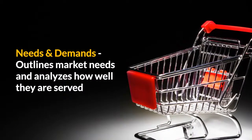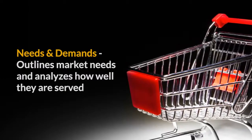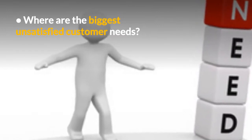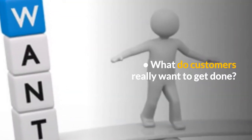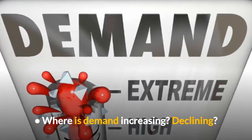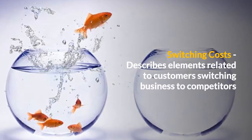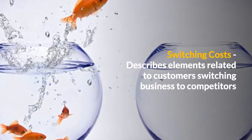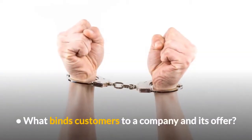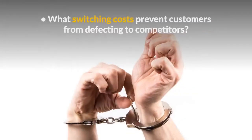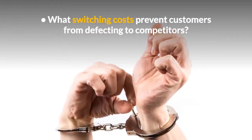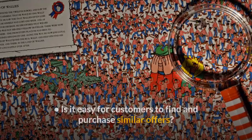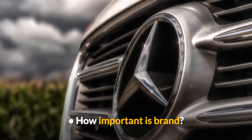Needs and demands: outline market needs and analyze how well they are served. What do customers need? What are their biggest unsatisfied needs? What do customers really want to get done? Where is demand increasing or declining? Switching costs describe elements related to customers switching from one business to another. What binds customers to a company and its offer? What switching costs prevent customers from defecting to competitors? Is it easier for customers to find and purchase similar offers? How important is brand, particularly online?